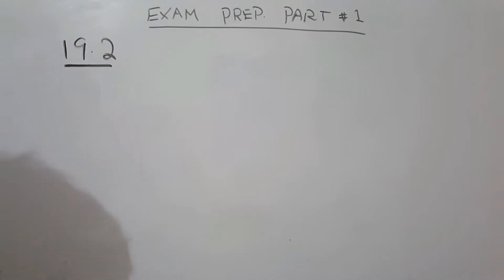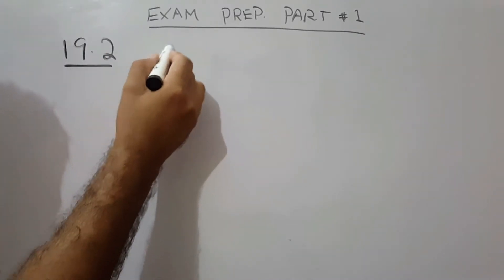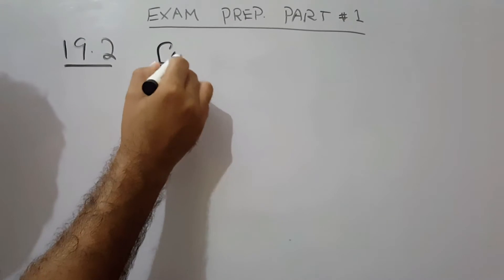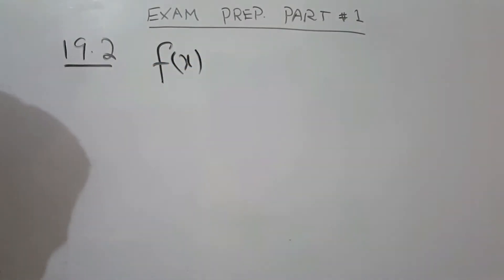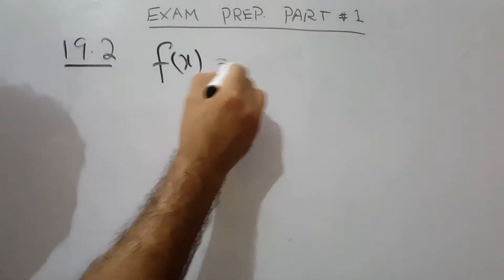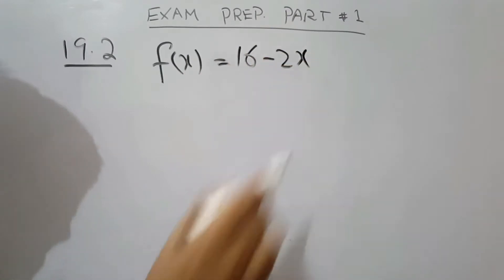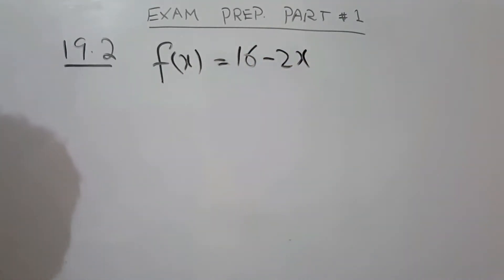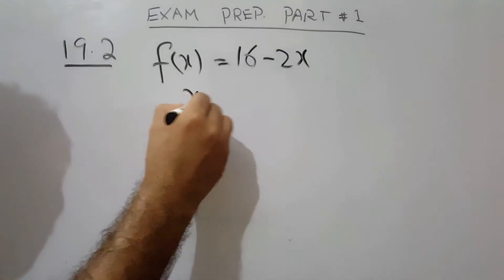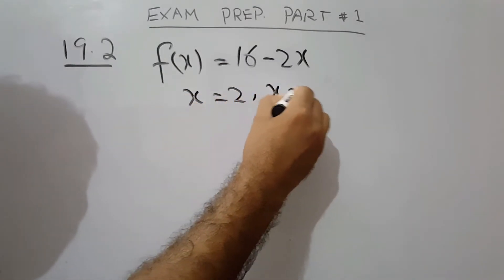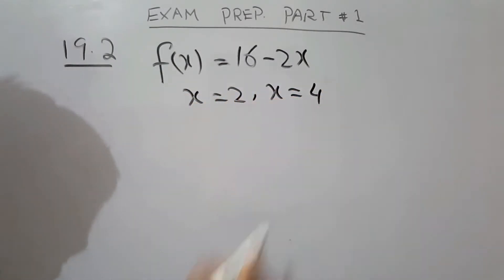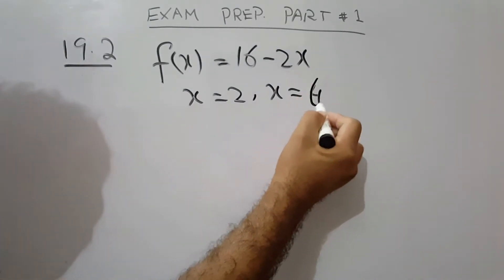Find the area under the curve. Simple question — the function is y = 16 minus 2x. The curve is given between x equals 2 and x equals 6.